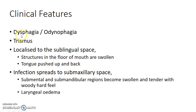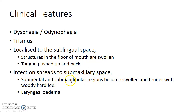Clinical features of Ludwig's Angina include dysphagia — difficulty in swallowing — or odynophagia — pain during swallowing — and trismus, which is difficulty in opening the mouth. When the infection is localized to the sublingual space, structures in the floor of the mouth are swollen and the tongue is pushed up and back. As the infection spreads to the submaxillary space, the submental and submandibular regions become swollen and tender with a woody, hard feel. There will also be laryngeal edema.